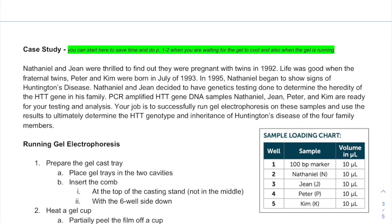They're fraternal twins, meaning they were the products of two separate eggs being fertilized — not identical twins. Nathaniel and Gene are concerned about their children possibly inheriting Huntington's, so their whole family is getting genetically tested. Nathaniel, Gene, Peter, and Kim all provide DNA samples.